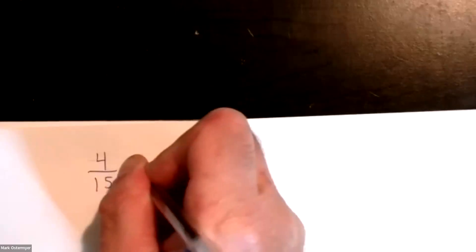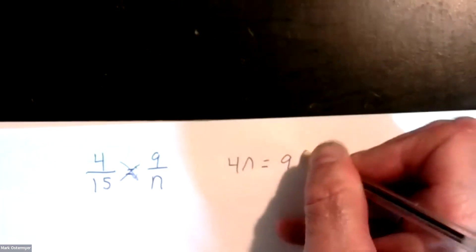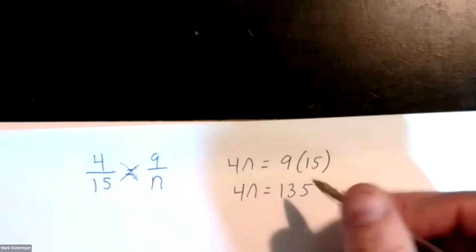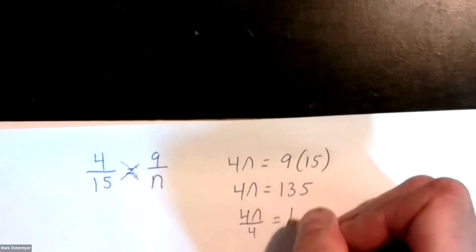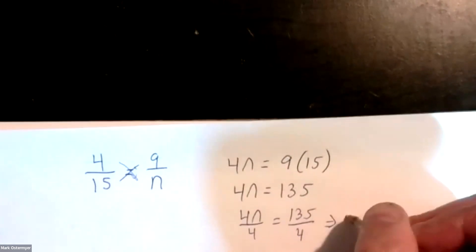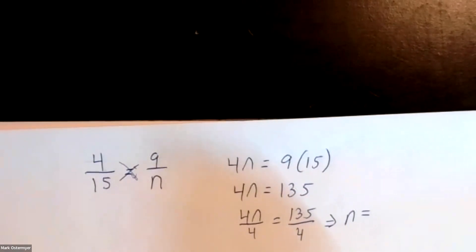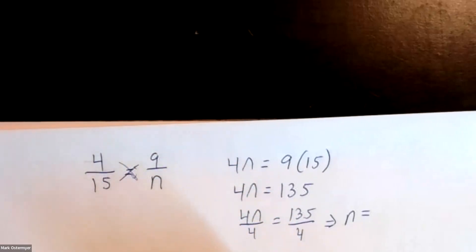Number twenty: four over fifteen, what is n? Four over fifteen equals nine over n. Cross multiply and equate cross products: four times n equals nine times fifteen. So four n is equal to one hundred thirty-five. Divide both sides by four. What's one hundred thirty-five divided by four? It's 33.75.